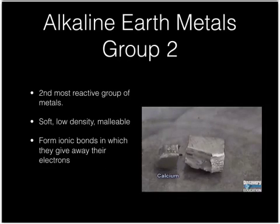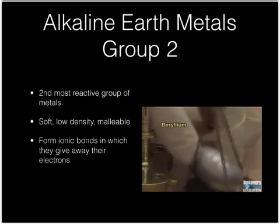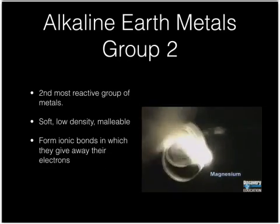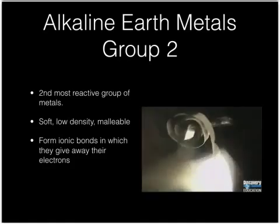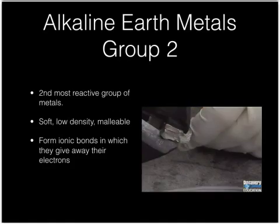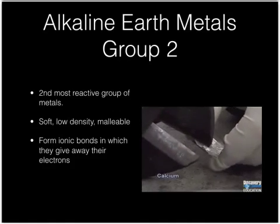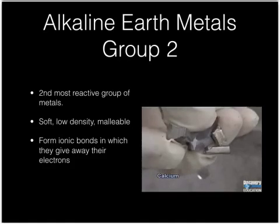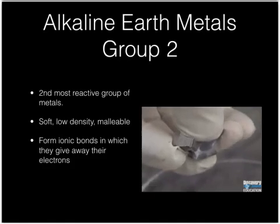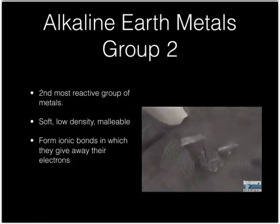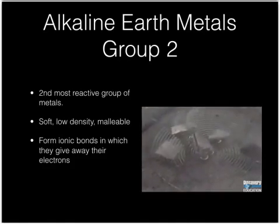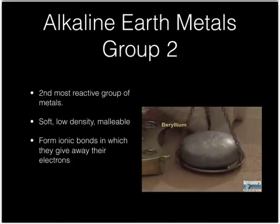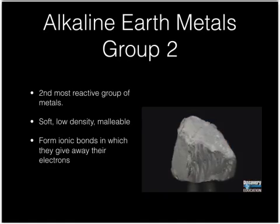Group 2 is the alkaline earth metals. They're the second most reactive group of metals — not quite as reactive as the alkali metals. When placed in water, they do not have the same reactive capability. They share some similar properties: low density, malleability, they're soft and can be cut easily with a knife. They also like to give away their electrons, just like the alkali metals.